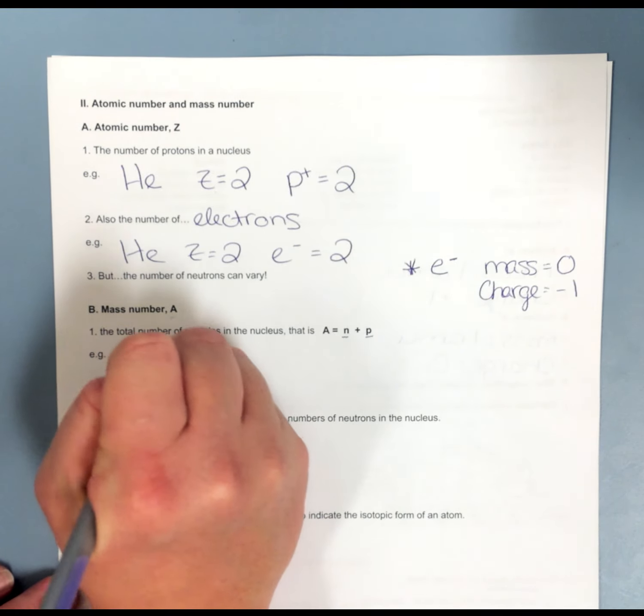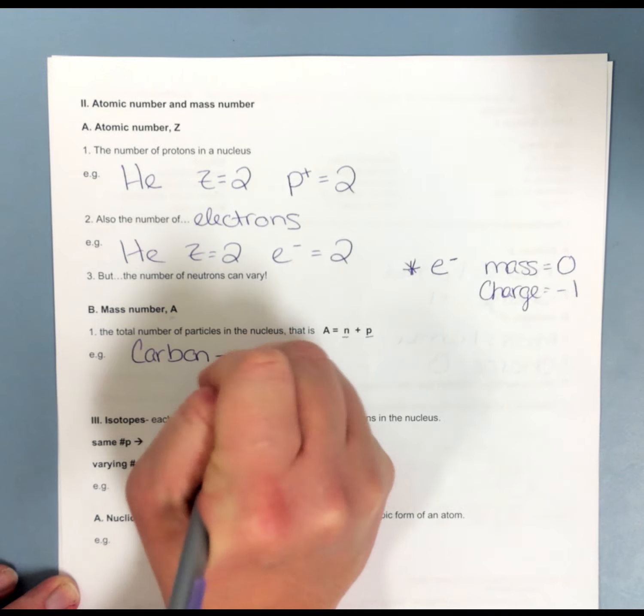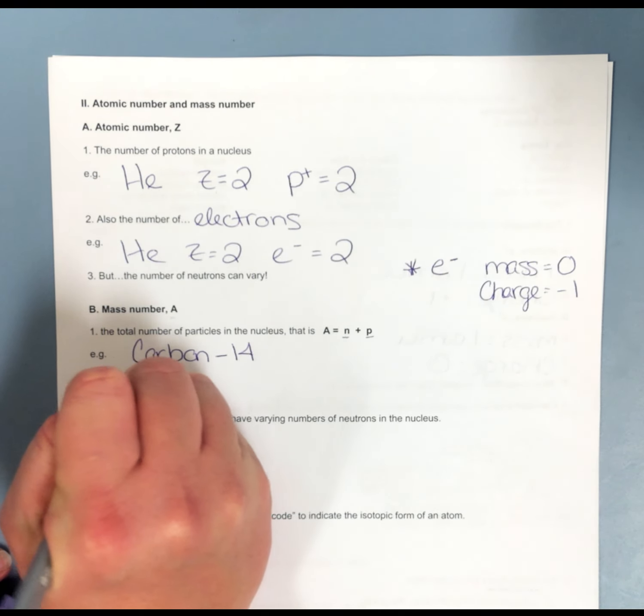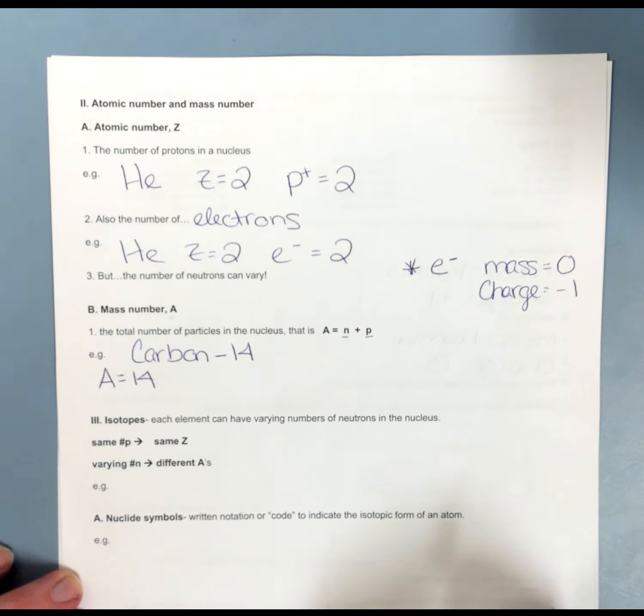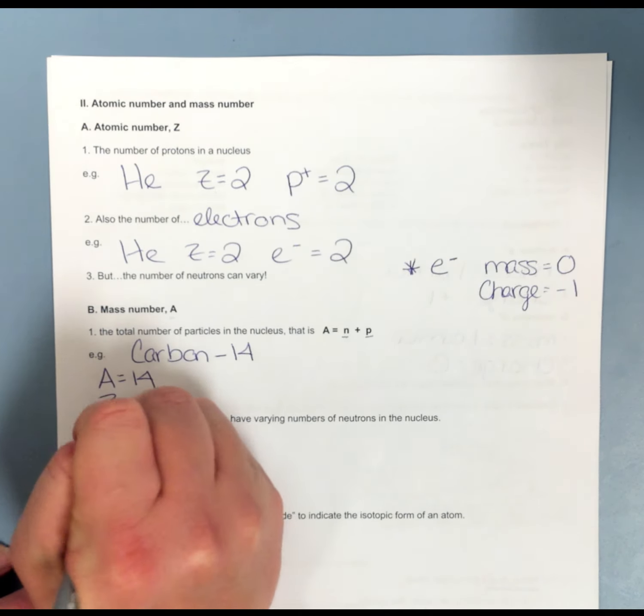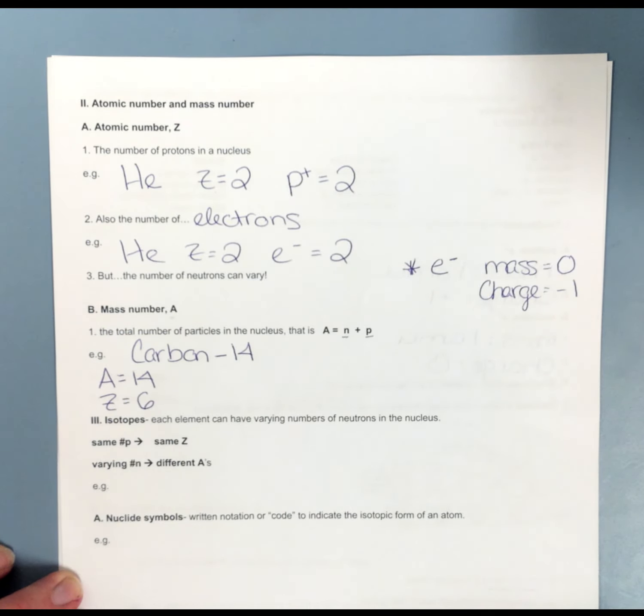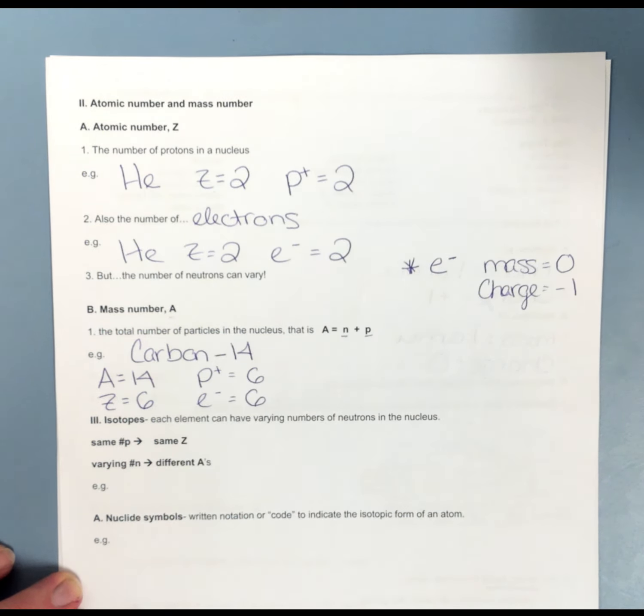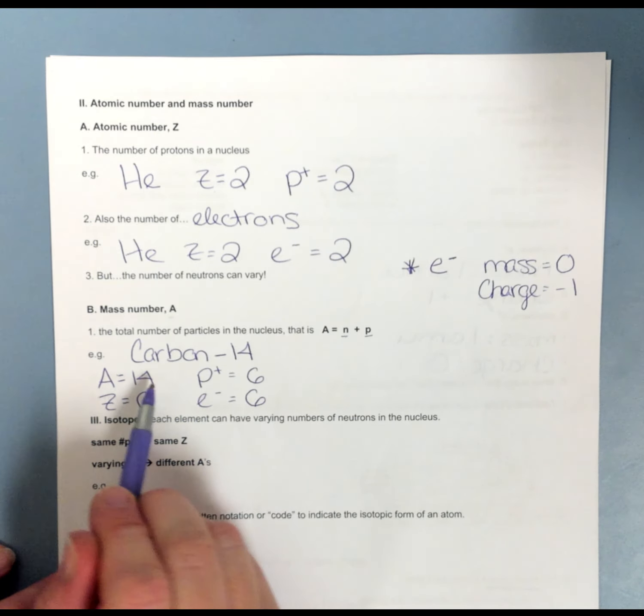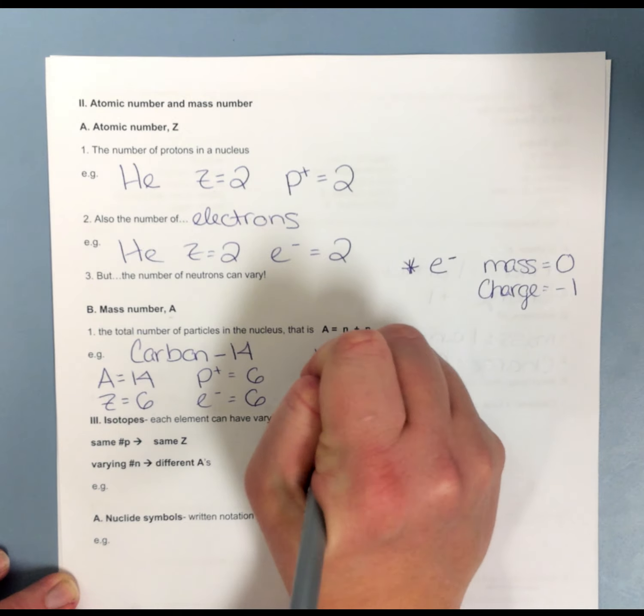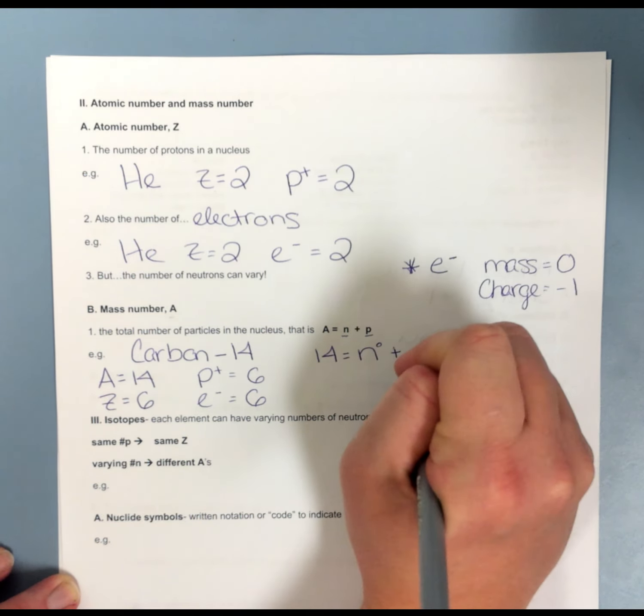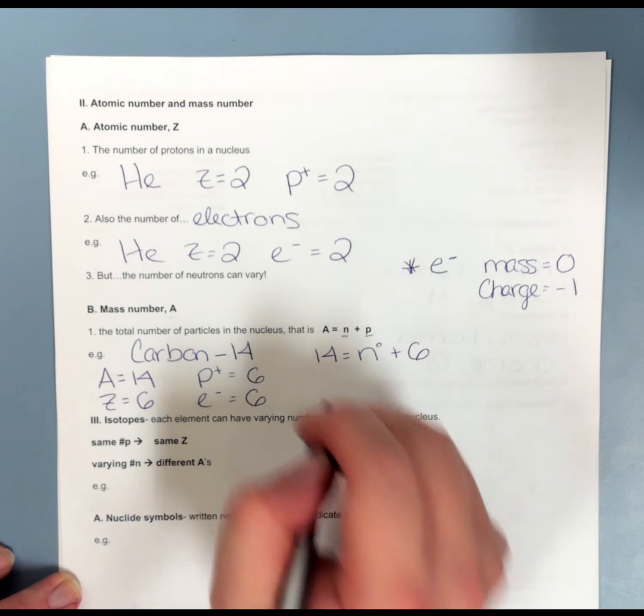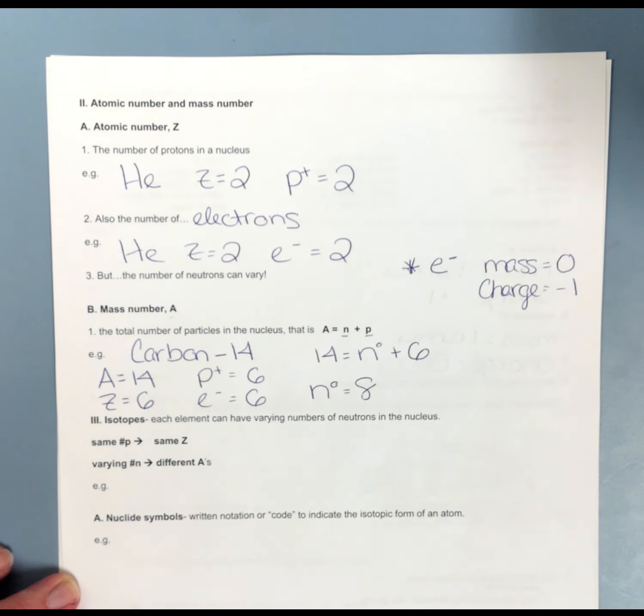My mass number is my neutrons plus my protons. I'm going to give you an isotope of carbon. Let's say, carbon-14. This right here tells me my mass number is 14. If I were to find carbon on the periodic table, I would see that my atomic number is 6. That means I have 6 protons and 6 electrons. If I were to plug this and this into this equation, I have that 14 equals my neutrons plus my protons. That means for this isotope of carbon, I'm going to have 8 neutrons.